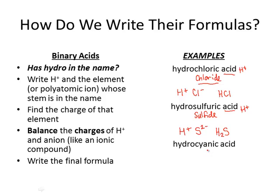And finally, hydrocyanic acid. 'Hydro' tells me I'm looking for an -ide ion, so I have cyanide. 'Acid' tells me there's H+. The cyanide anion is CN−1. They're 1 to 1 — 1 plus, 1 minus — so we just get HCN.